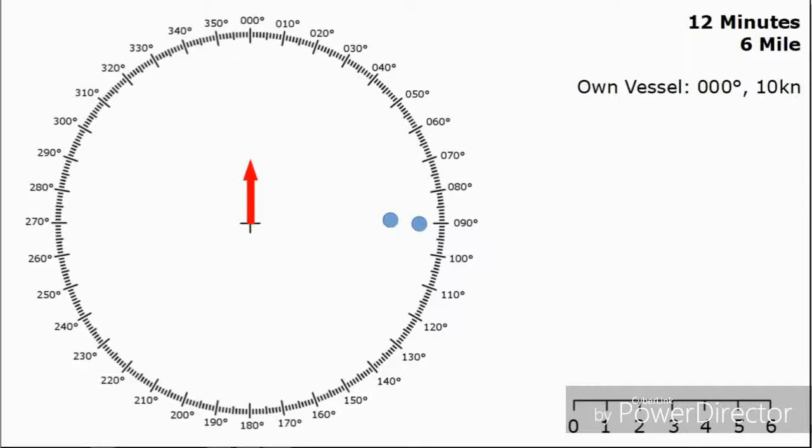Six minutes later, which is half our time period, we can complete the second plot. Again we haven't really got much to go on, we still got quite scanty information. We can't make any alterations at this stage. Six minutes after the second plot or 12 minutes after the original one we've got our third echo. Now that we've got three echoes we have enough information to complete the plot.